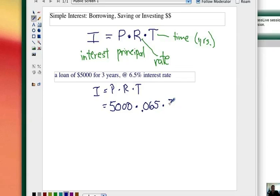Time is going to be three. That's in terms of years. Now it's just a simple multiplication problem. You're going to get $975.